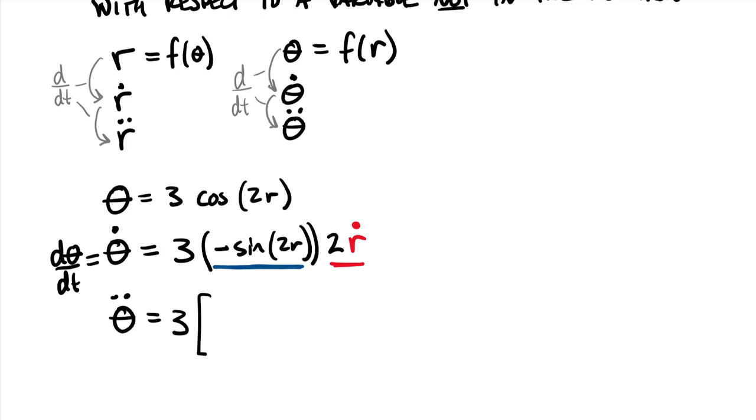I will take the first term, negative sine of 2r, times the derivative of the second term. The second term here is 2r dot. The time derivative of r dot is r double dot, that's the radial acceleration. Then I'm going to add to this, once again this is the product rule, so I'm taking the derivative of the first term. The derivative of negative sine of 2r gives me negative cosine of 2r, times the derivative of what's inside the cosine term, which is another 2r dot, times the final term which was 2r dot.